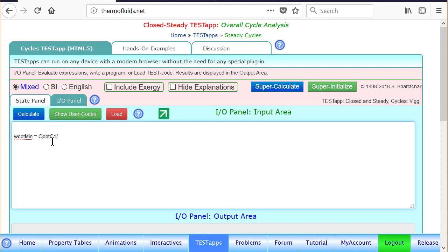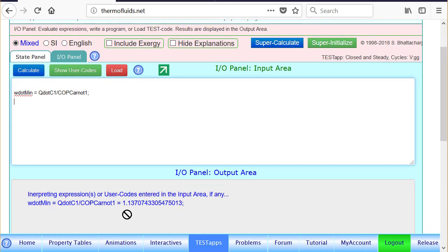divided by COP Carnot. So if I have not made a mistake in the typing, it should produce, yes, only 1.137 kilowatt will be the power consumption. The answer is shown in the IO panel here. So notice that in the IO panel, we can access any variable from the state or any other panels.